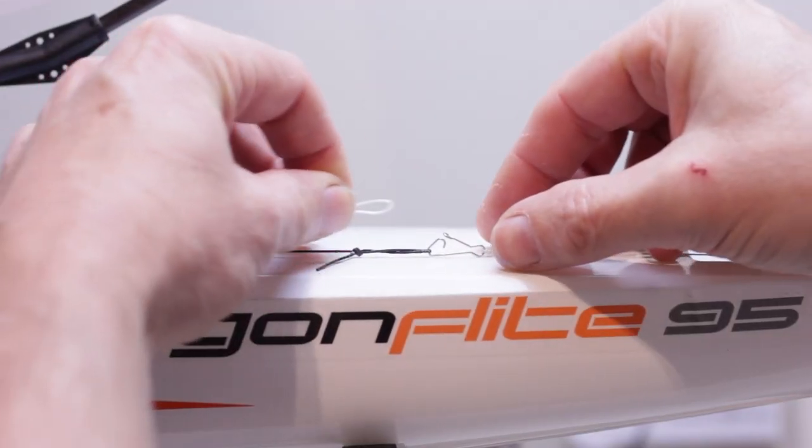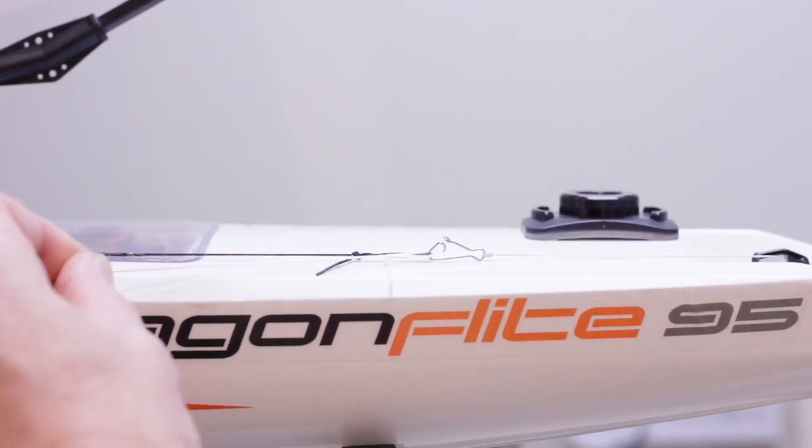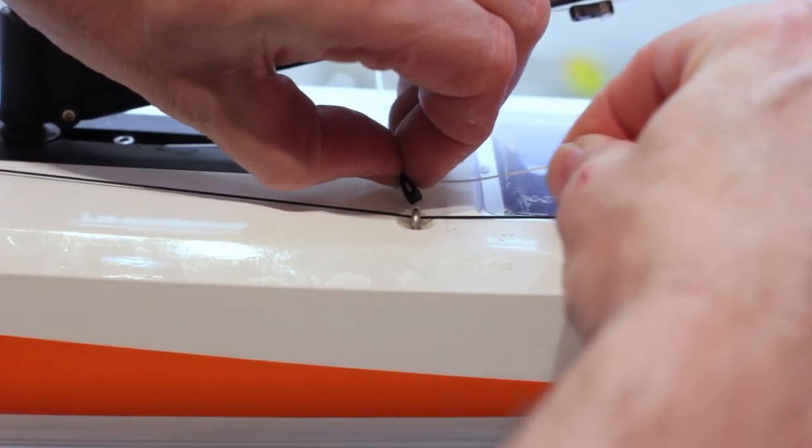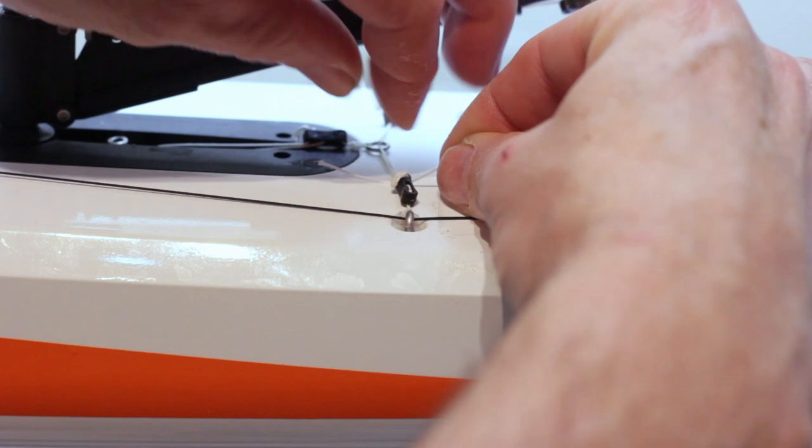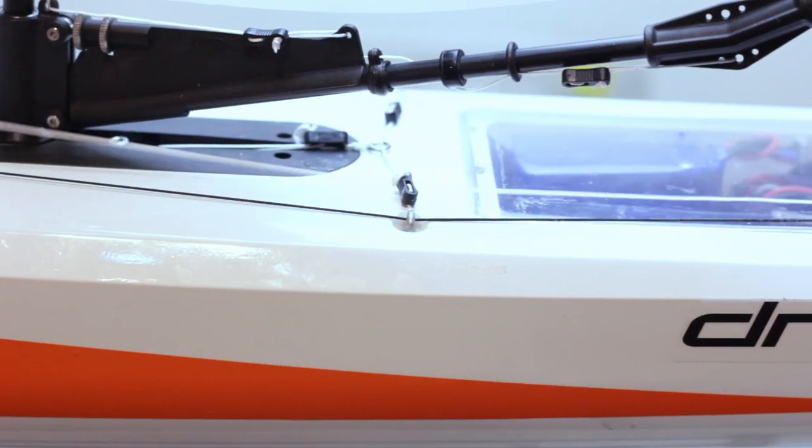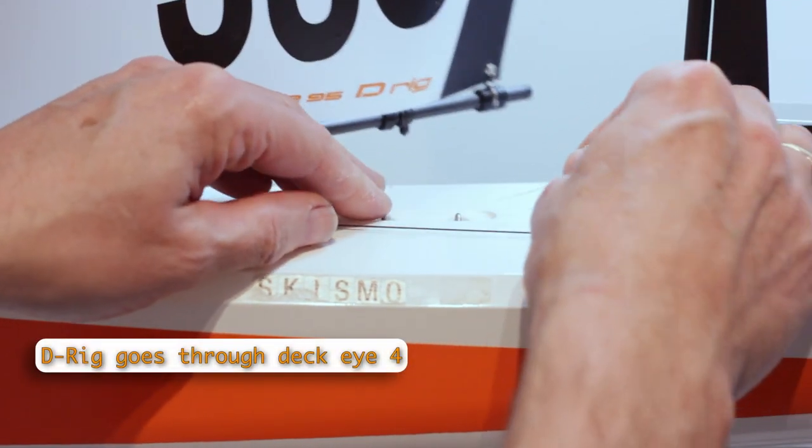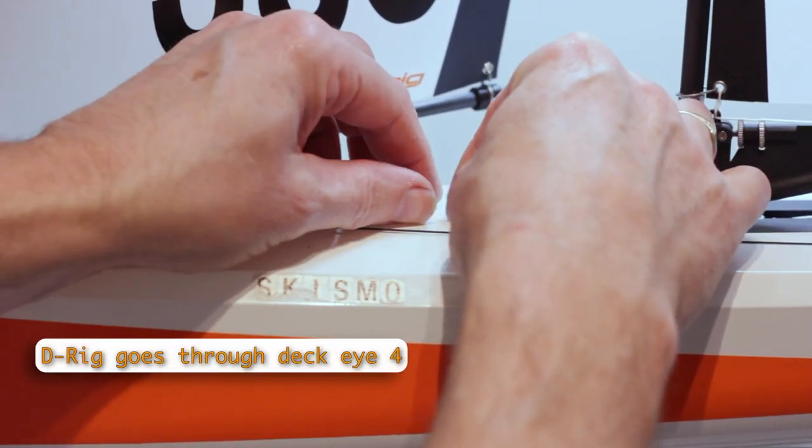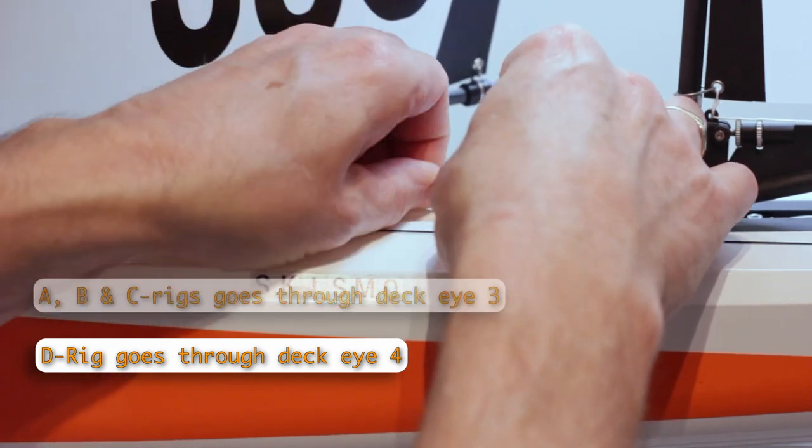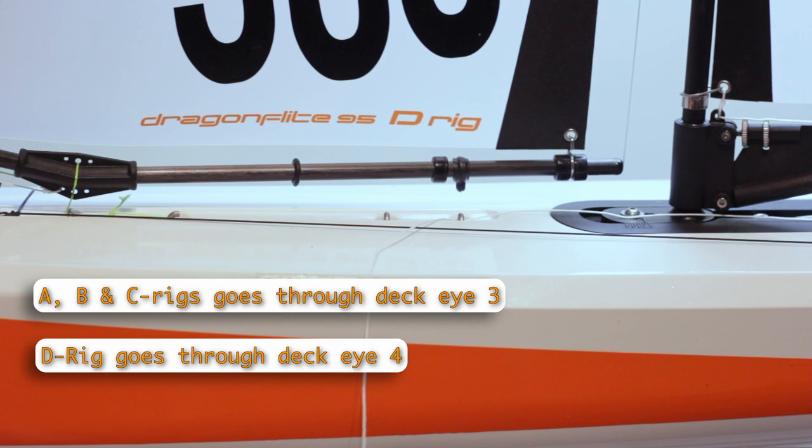And one last thing to do to complete the rig and that is the jib sheet. Cut an 850mm length of dyneema and tie a loop in one end. Click this loop to the winch line. Run the other end forward and under the bridle line. Then through deck I4 for the D-rig and for all other rigs run this through deck I3.